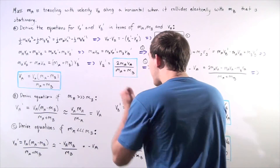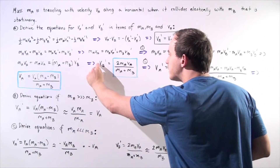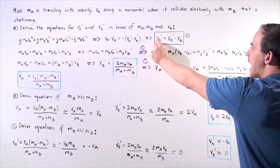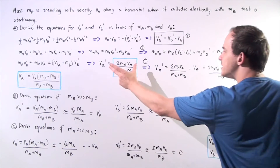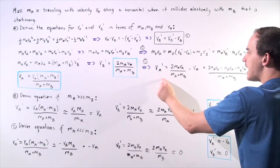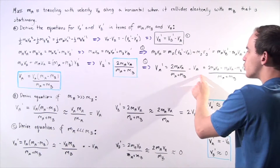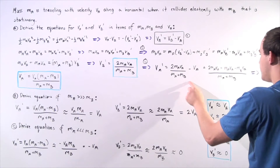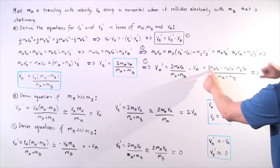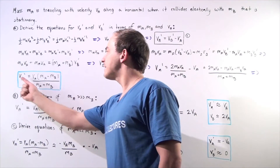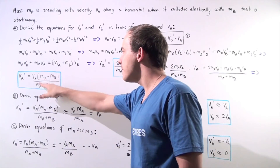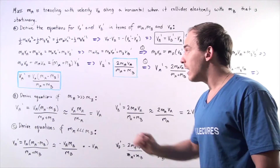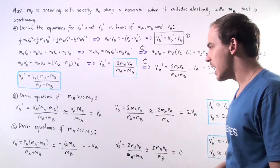We can now take the expression for VB prime and plug it into equation one to solve for VA prime. Finding a common denominator of MA plus MB and subtracting terms, we get VA prime equals VA multiplied by MA minus MB, divided by MA plus MB. So we're done with part one — we've found both equations for VA prime and VB prime.